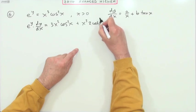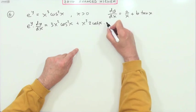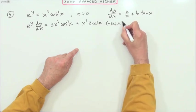Multiplied by the derivative of that, which is negative sin x.